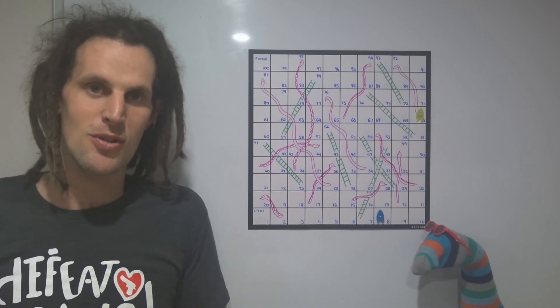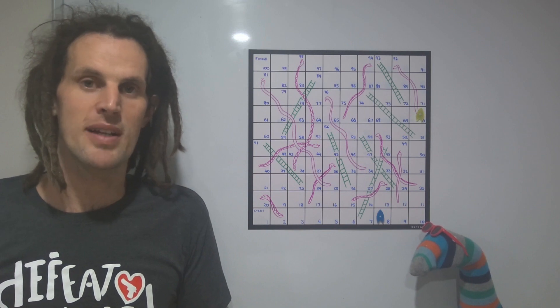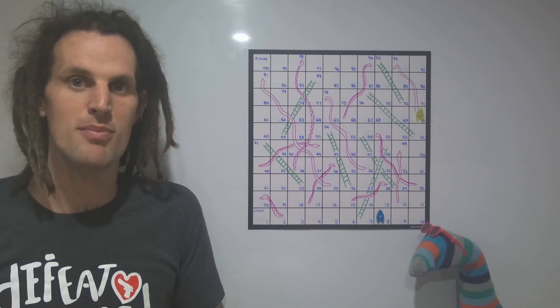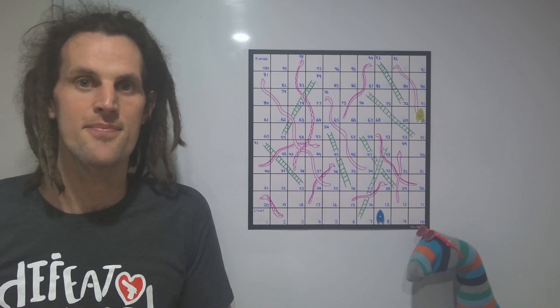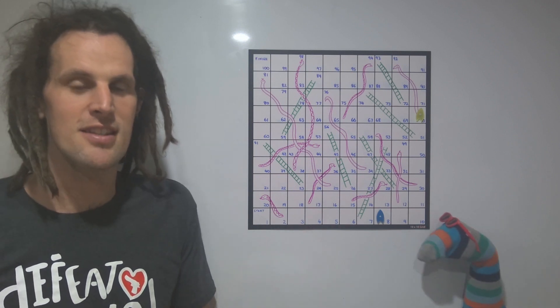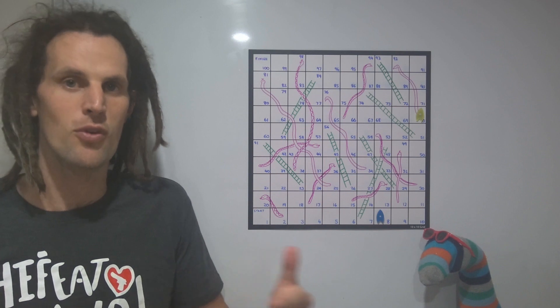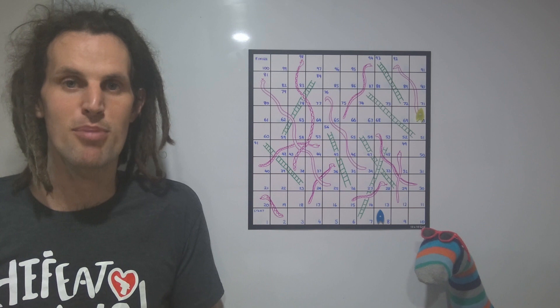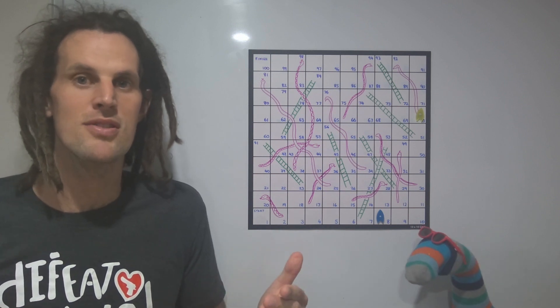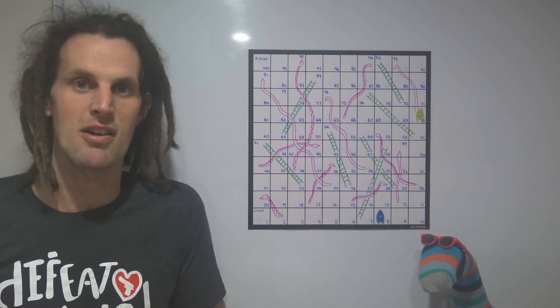This game enables students to apply their knowledge of multiplication strategies to solve novel problems like 17 times 4 or 3 times 29. It also gives students the chance to think algebraically as they try to avoid opponents landing on them. And then finally, it gives them the opportunity to think about number properties and how they can use prime numbers, multiples, and factors to their advantage.